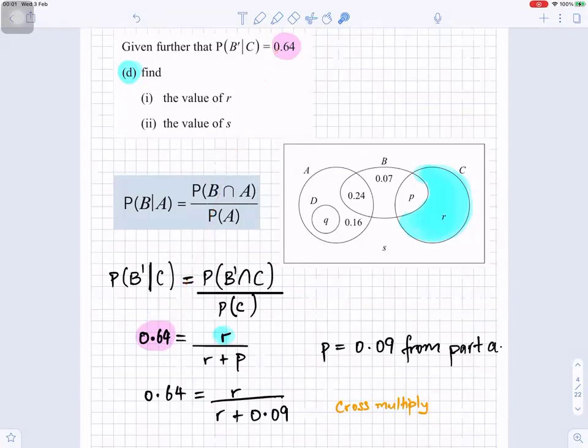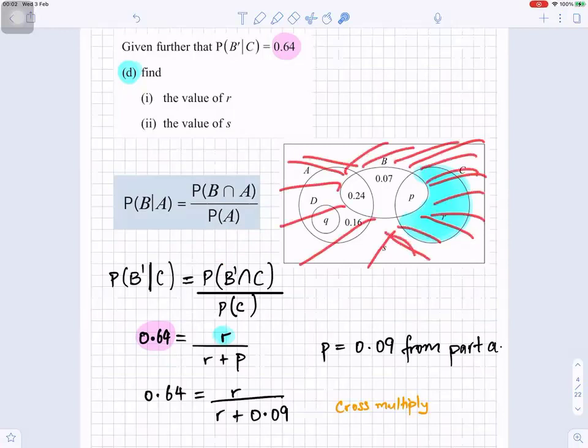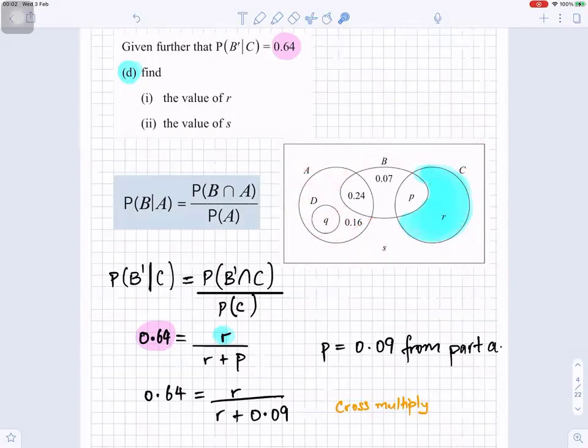Now, probability of everything outside B, intersection C, everything outside B, that's everything outside B, I've shaded there. And intersection C would be the part that is in C, and that's just R. Divided by probability of C, everything inside C. Everything inside C is R plus P, because that's everything inside C.